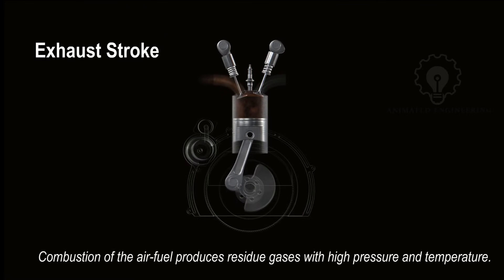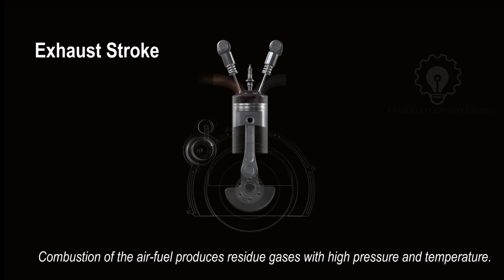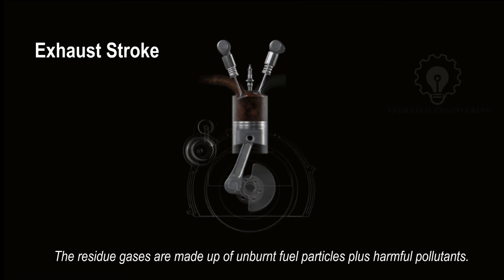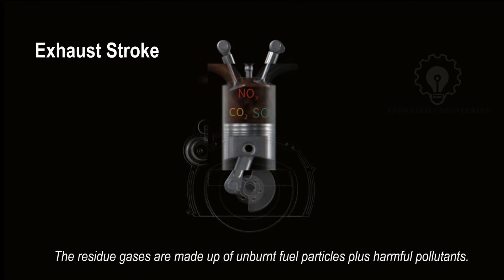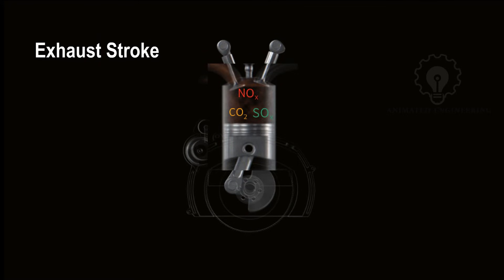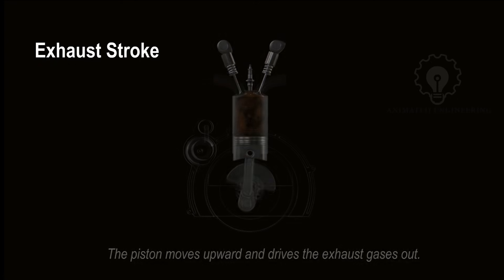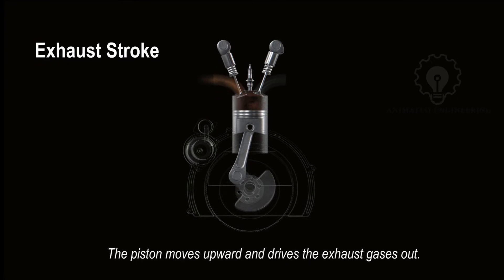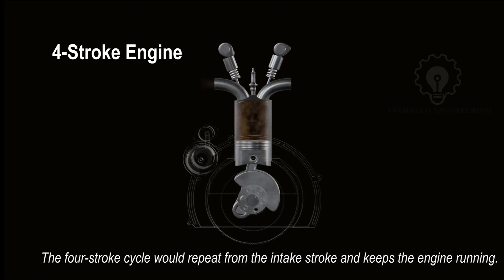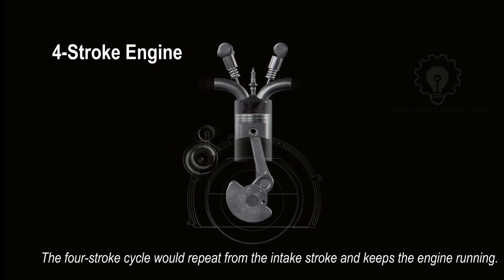Exhaust stroke: combustion of the air-fuel mixture produces residue gases with high pressure and temperature. The residue gases are made up of unburnt fuel particles plus harmful pollutants. During the exhaust stroke, the exhaust valve is open and the intake valve remains closed. The piston moves upward and drives the exhaust gases out. The four-stroke cycle then repeats from the intake stroke and keeps the engine running with power.